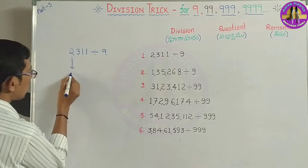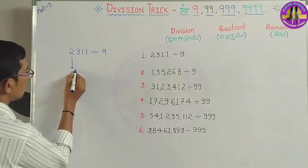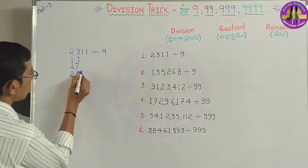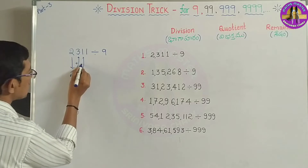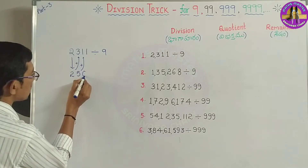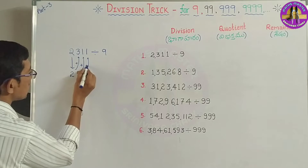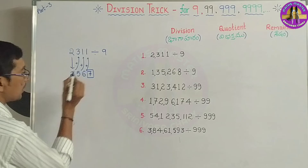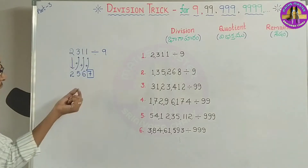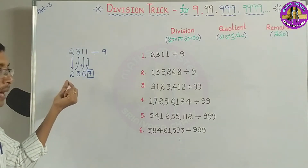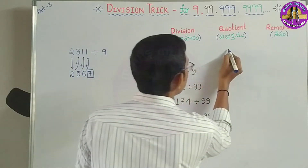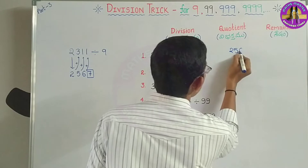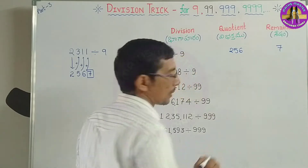First of all, we will add a digit. We add the next digit — it becomes 5. We add the next digit — it becomes 6. We add the next digit — it becomes 7. The last digit gives the remainder. All others become the quotient: 256. So we add the next digit and it becomes 7. The remainder is 7.